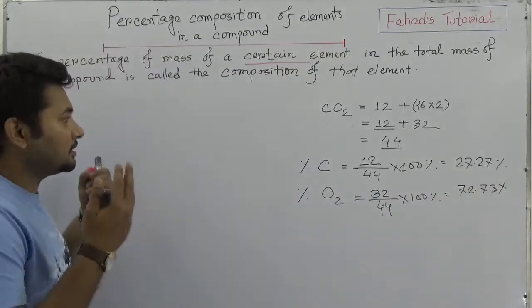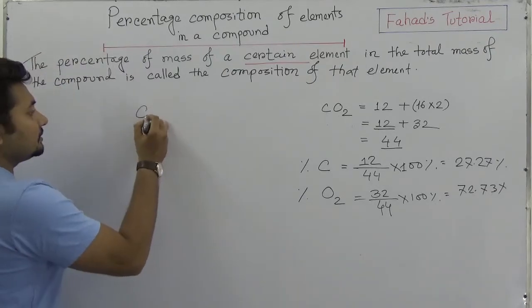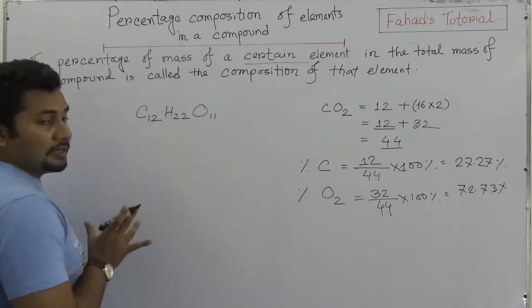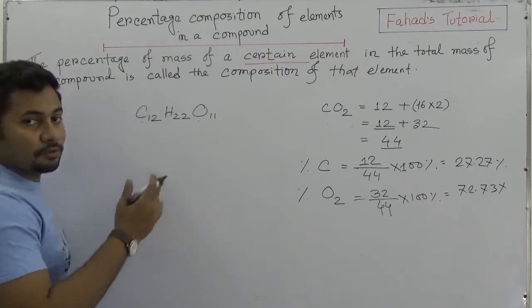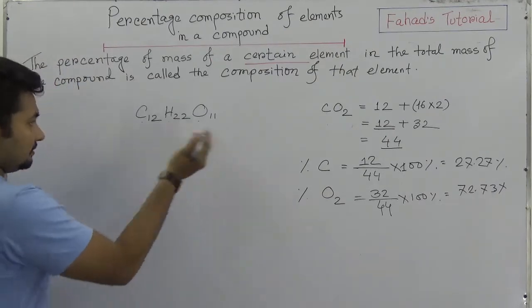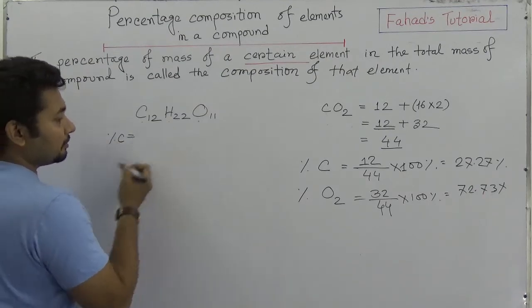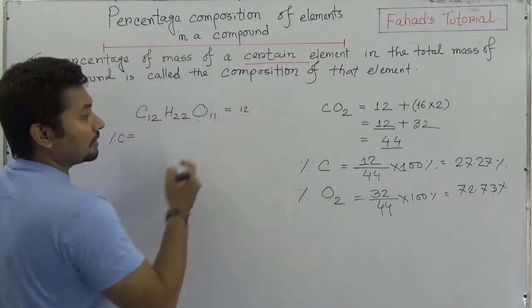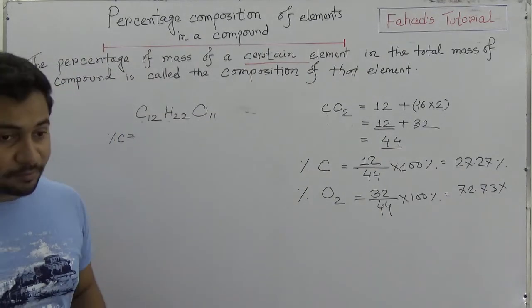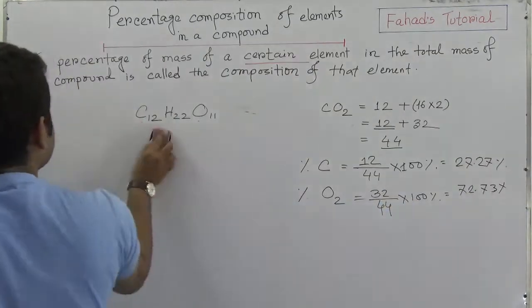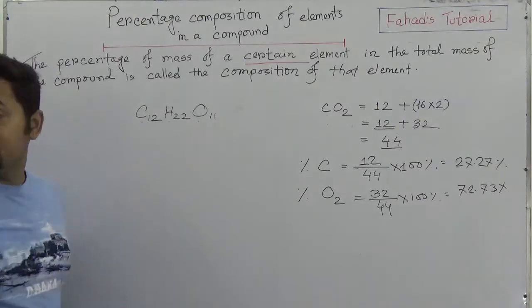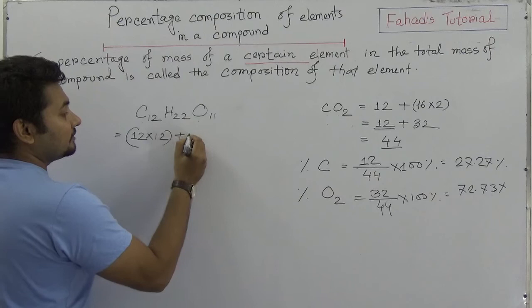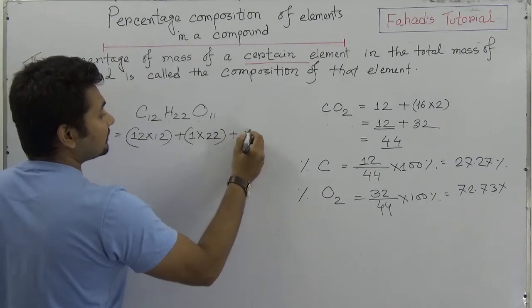Now let's find the percentage composition of sugar, which is C₁₂H₂₂O₁₁. This is a comparatively bigger molecule with three elements. Before finding percentages, we need to find the molecular mass. Carbon is 12 × 12 = 144, hydrogen is 1 × 22 = 22, and oxygen is 16 × 11.